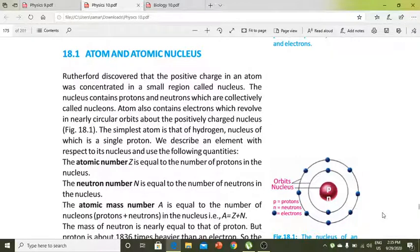Atoms also contain electrons which revolve in circular orbits. The simplest atom is hydrogen, whose nucleus is a single proton.